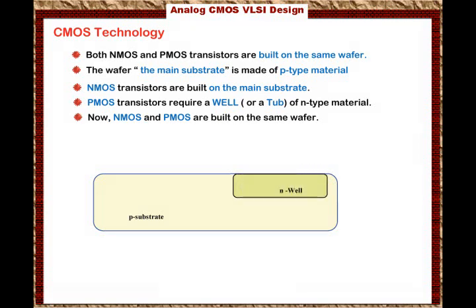Once we create the N-well for the PMOS transistor, we can build an NMOS on the main substrate and a PMOS on the N-well. For the NMOS, we diffuse the heavily doped N-plus material to represent the source and drain, then add the layer of silicon dioxide and the layer of polysilicon to represent the gate.